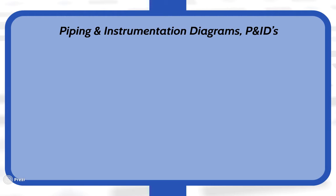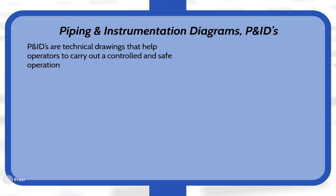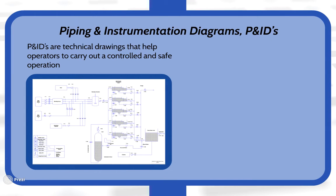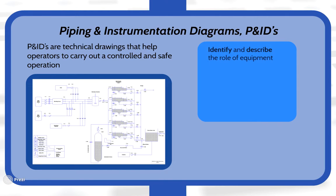Piping and instrumentation diagrams are technical drawings that help operators to carry out a controlled and safe operation. They exist for all different processes in the industry. They identify and describe the role of equipment such as valves, pumps and compressors. They can be updated or modified.